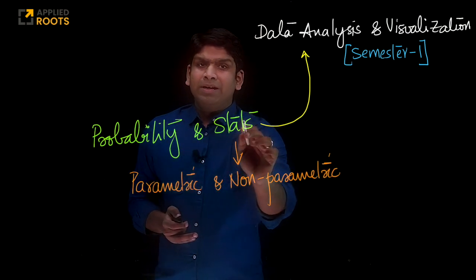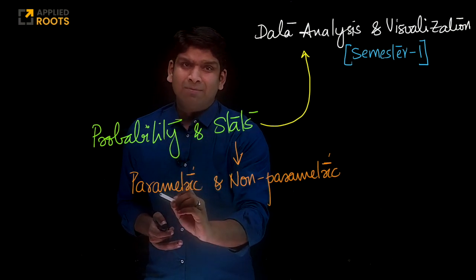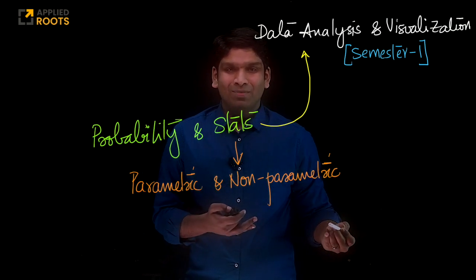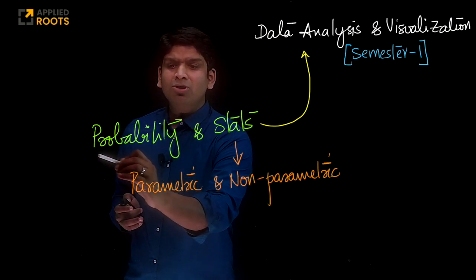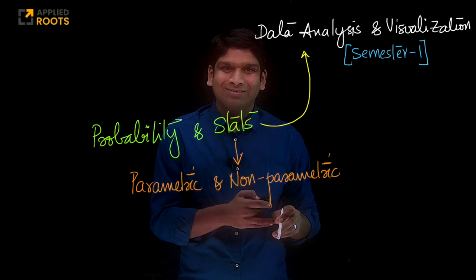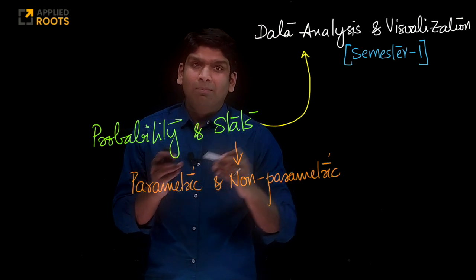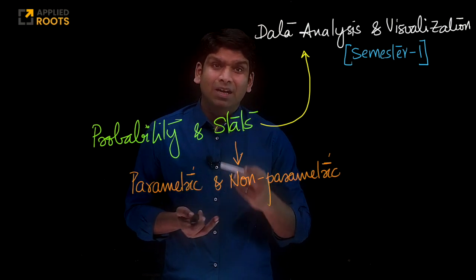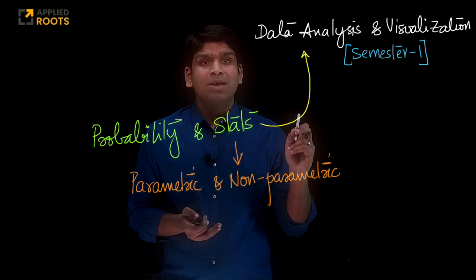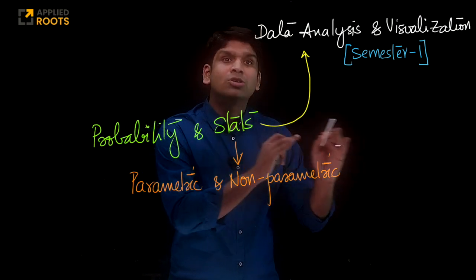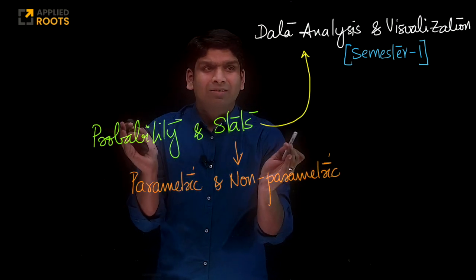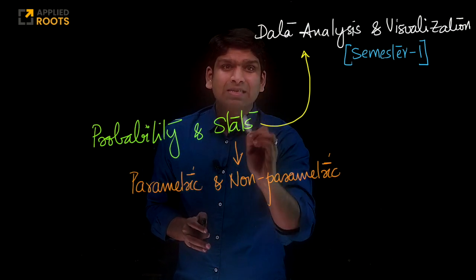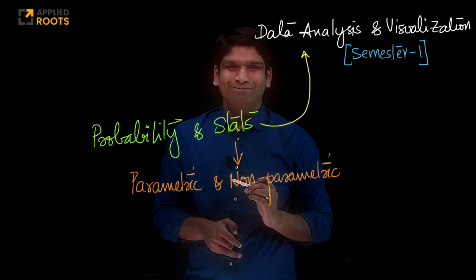For probability and statistics, we will cover both parametric methods and non-parametric methods, because sometimes you can't use parametric techniques everywhere. Please understand that we may not be able to cover everything in probability in this single course. Some concepts like Bayesian machine learning or Bayesian statistics will be covered in the context of Bayesian models in future courses. The probability and statistics covered here is specifically in the context of data analysis and visualization.